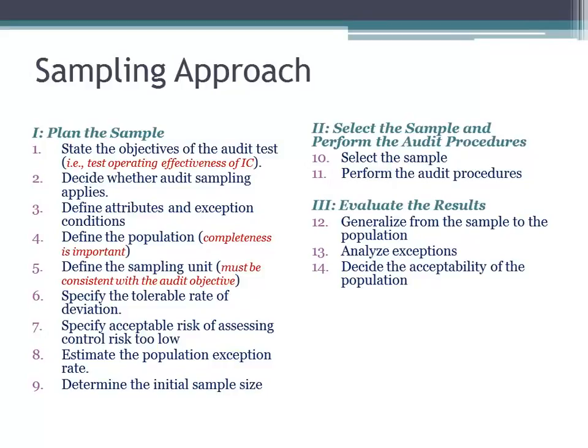Specify the acceptable risk of assessing control risk too low. What risk are you willing to accept that you have assessed internal control risk too low? Because if you've assessed internal control risk too low, that means you are over-relying on those controls. So what amount of risk are you willing to accept? As with the tolerable deviation rate, there are AICPA tables — you'll typically see 5% and 10% used.